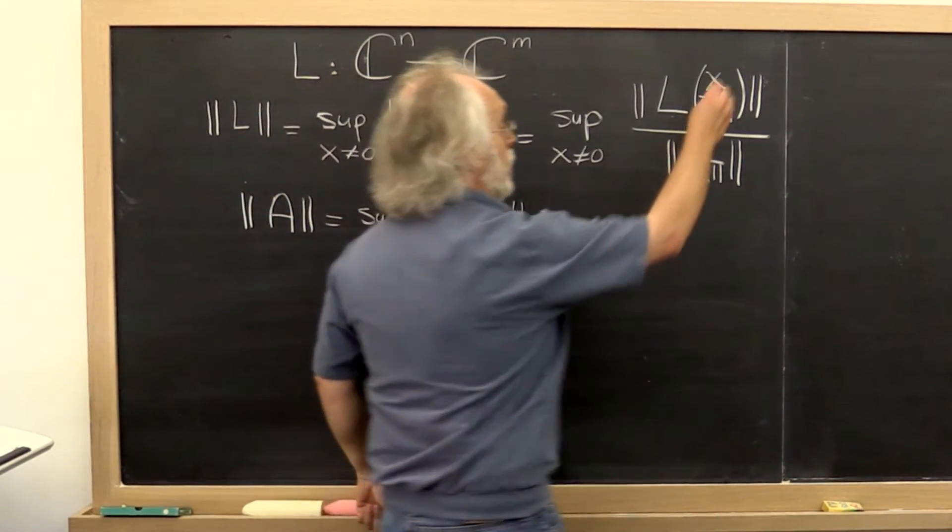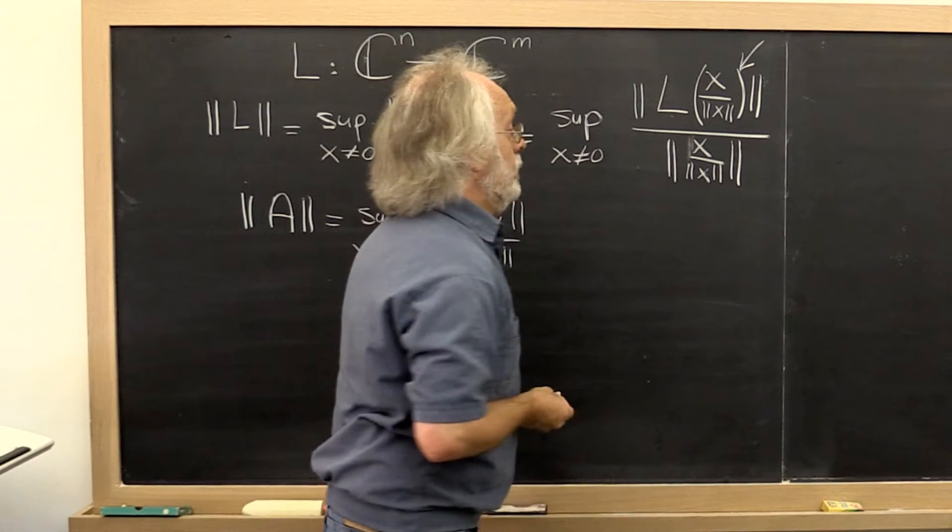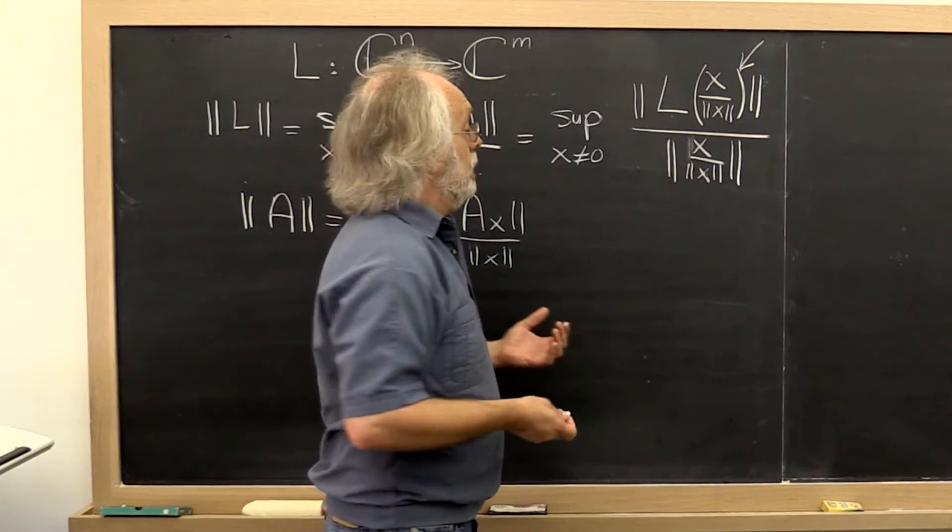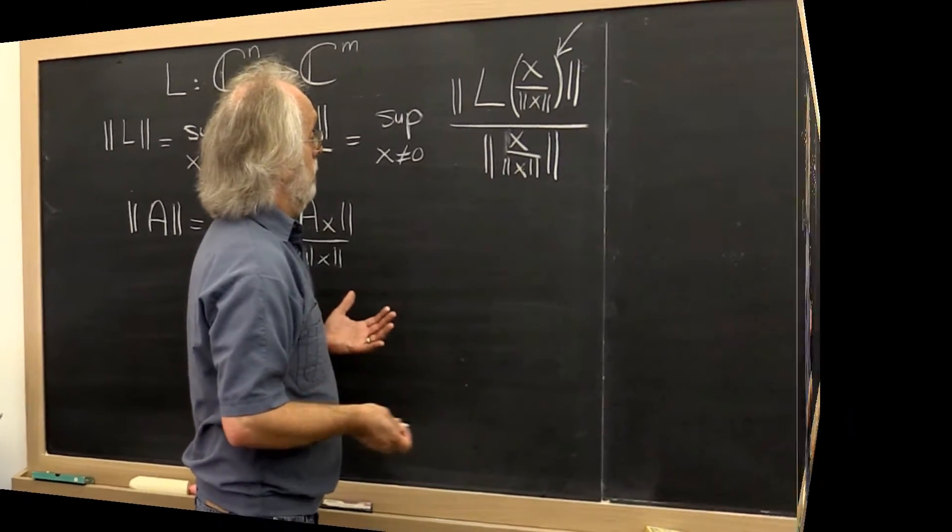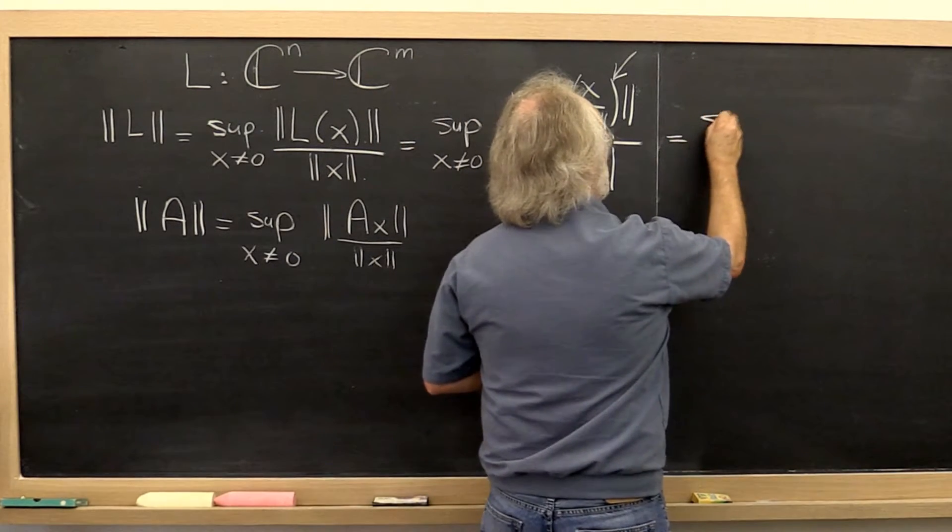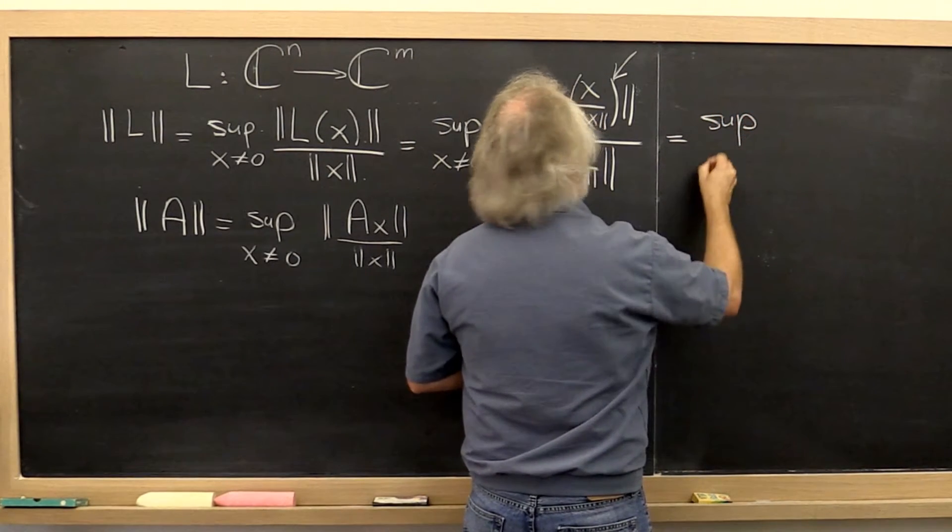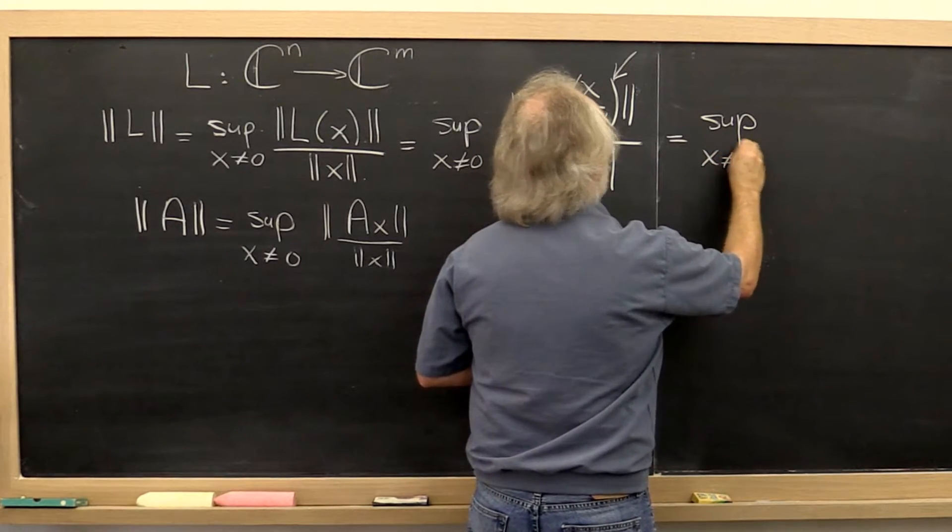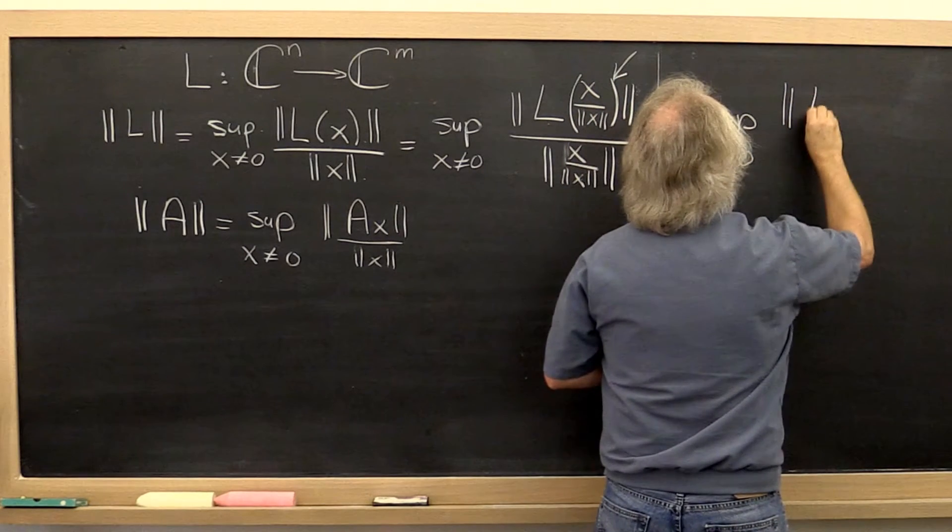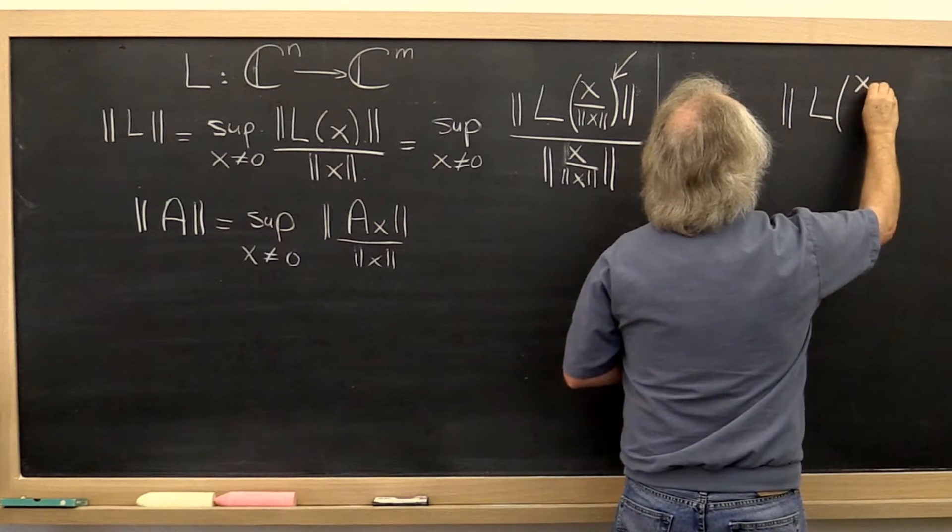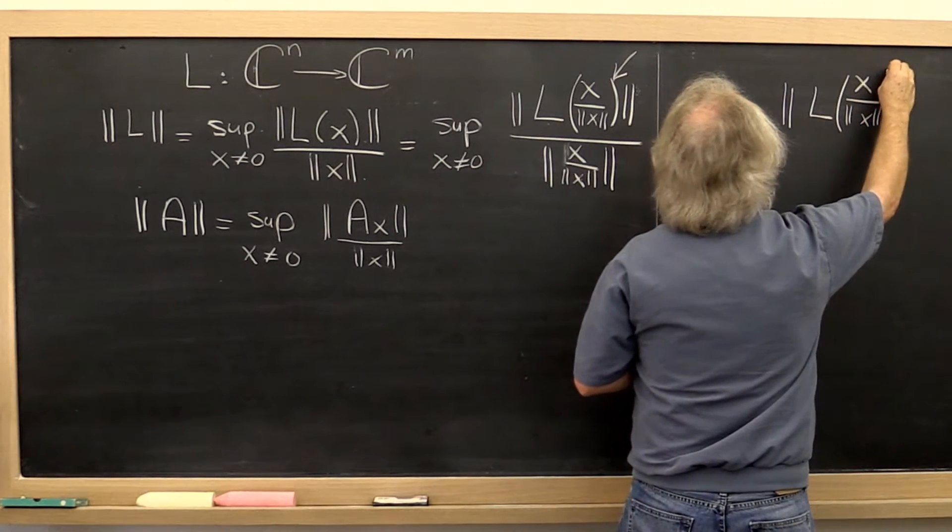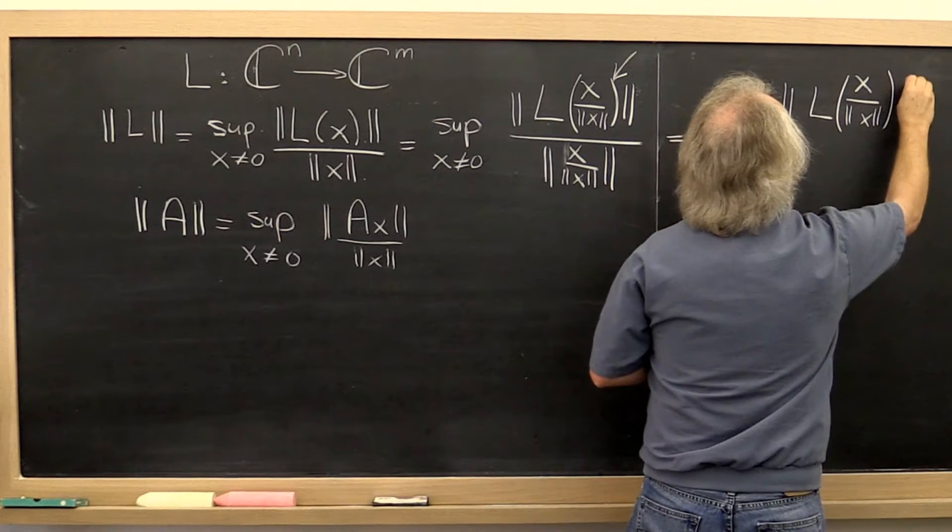And what we now recognize is that this is a vector of size of length 1. Of norm 1. So what we conclude is that this is the same as the supremum over all x not equal to 0 of by how much a vector of length 1, as measured by the given vector norm, is stretched.